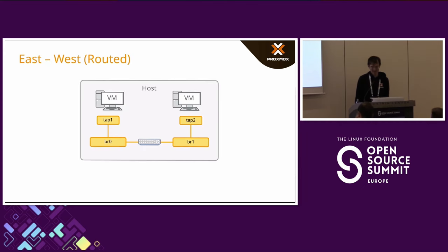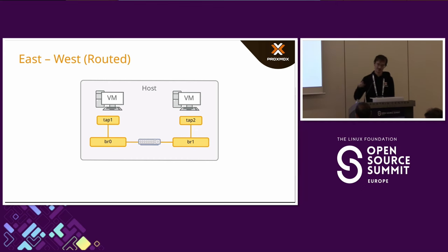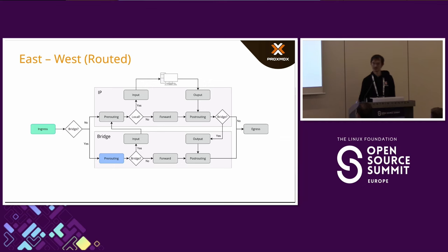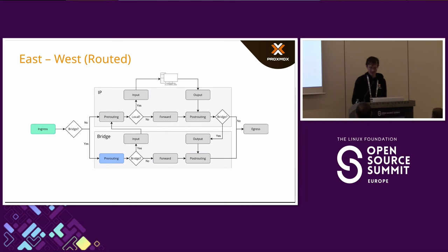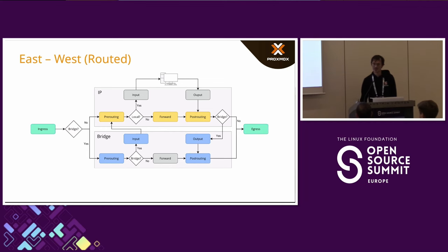Another example: two VMs on two different bridges with the host routing between them. This shows how traffic flows through the NF Tables hooks — two tables are involved because traffic originates from a bridge, gets routed through the host, and goes back into another bridge. In the bridge table it checks if traffic stays on the same bridge; in this case no, so it enters the input chain of the bridge. Then it enters the host, which checks whether to deliver locally or forward — it forwards — entering the forward chain, and so on until it lands on the other bridge. This shows how traffic flows through different NF Tables hooks.